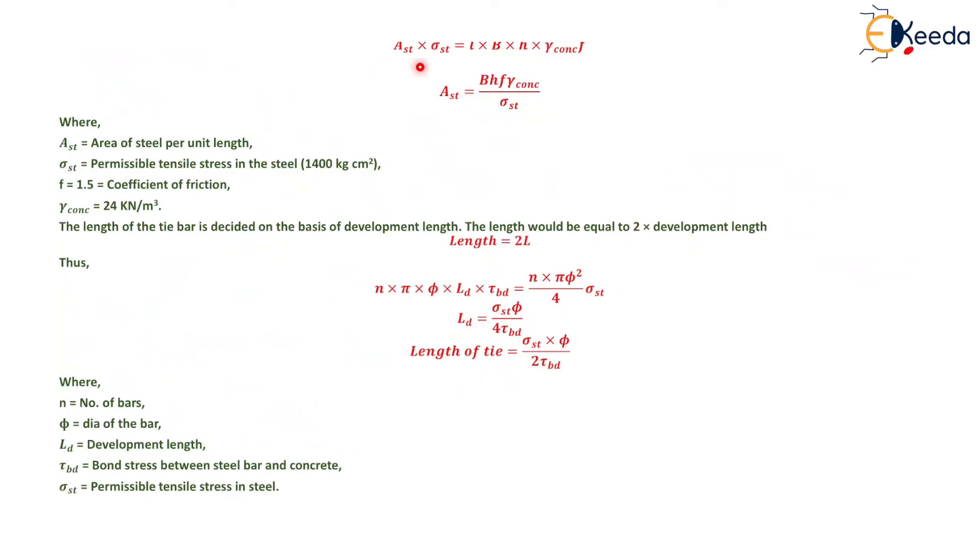Ast·σst = L·B·H·γconcrete·f. From which Ast = B·H·f·γconcrete/σst, where Ast is the area of steel per unit length, σst is the permissible tensile stress in steel (1400 kg/cm²), f is the coefficient of friction (1.5), and γconcrete = 24 kN/m³.